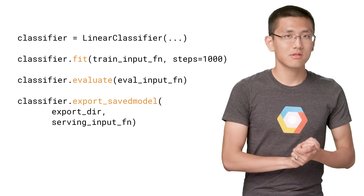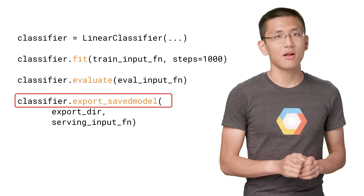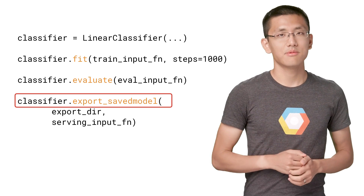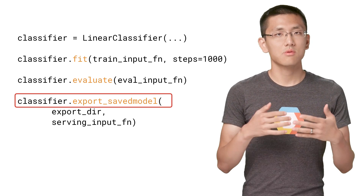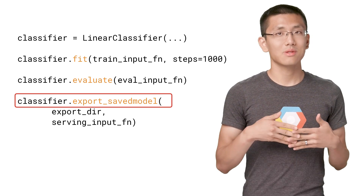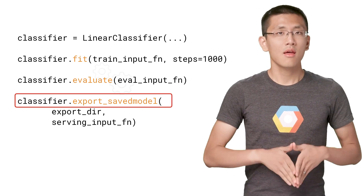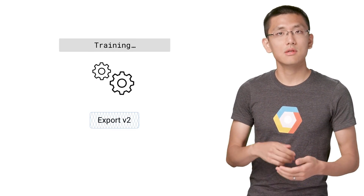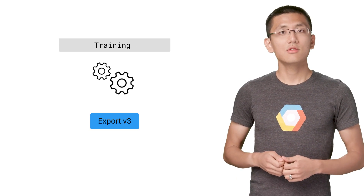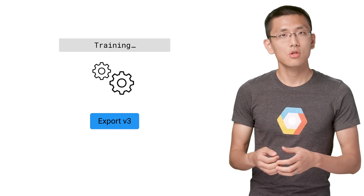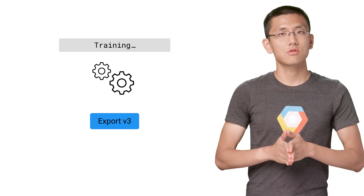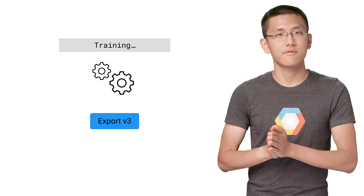The function that we're interested in is called export-saved-model, and we can run it directly from our classifier object once we're satisfied with the state of the trained model. This will take a snapshot of your model and export it as a set of files that you can use elsewhere. Over time, as your model improves, you can continue to produce exported models in order to provide multiple versions.